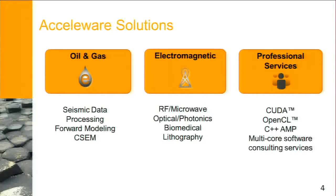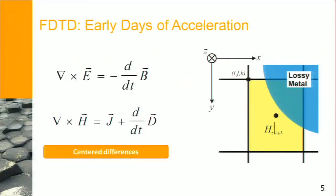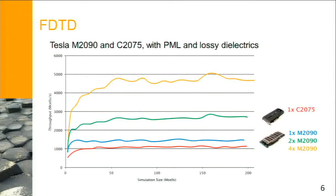CSEM is particularly interesting for us because it bridges electromagnetics and oil and gas, right in between our core expertise. Finite difference time domain is a brute force technique to solve Maxwell's equations using a finite difference marching time domain scheme. The first product was coded in OpenGL because CUDA didn't exist yet. Our FDTD has become very mature and now runs on clusters of GPUs — on four GPUs we're running at about five giga-cells per second and it scales very well.